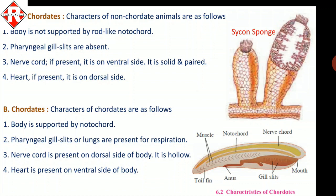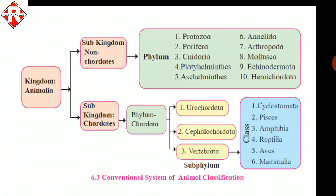In chordates, the nerve cord is present at the dorsal side of the body and is mainly hollow. Regarding the heart: in non-chordates, the heart is present at the dorsal side, whereas in chordates, the heart is present at the ventral side. Kingdom Animalia is divided into two sub-kingdoms: chordates and non-chordates.